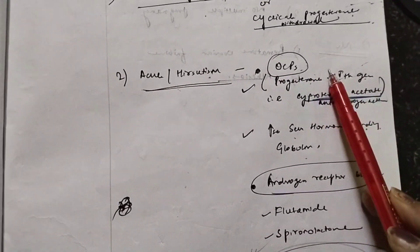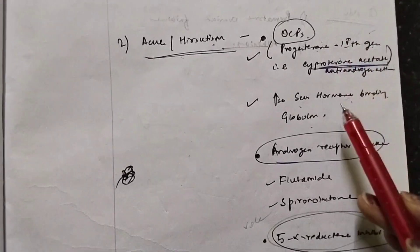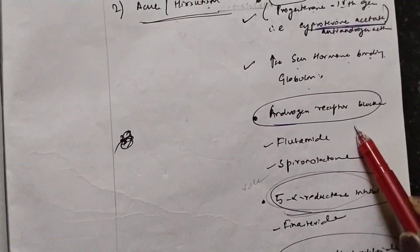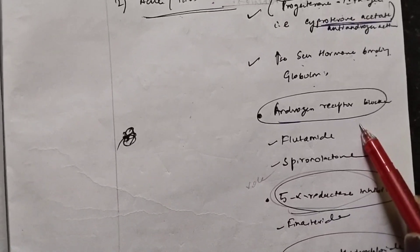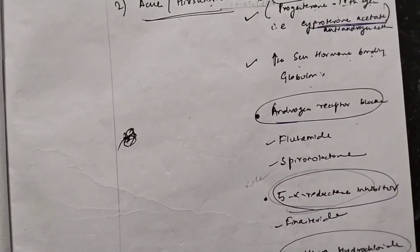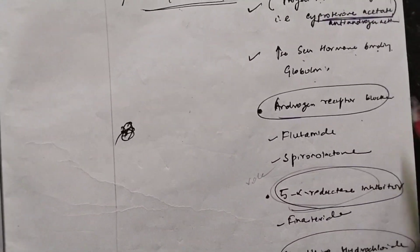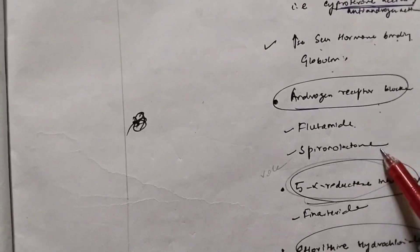First condition was OCPs where you have two options: the fourth generation progesterone and serum hormone binding globulin. Now you have the androgen receptor blocker because we know that there is more androgen in the body. We don't want these androgens to get attached to its site and manifest its actions. So we give androgen receptor blocker, which is flutamide and spironolactone.